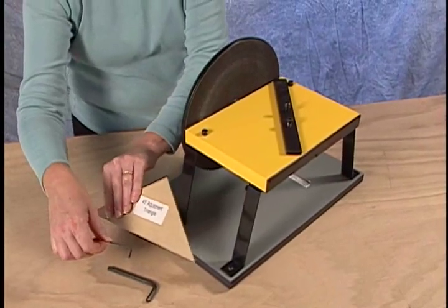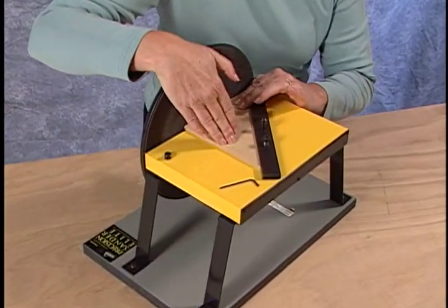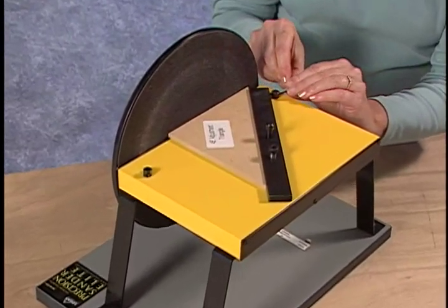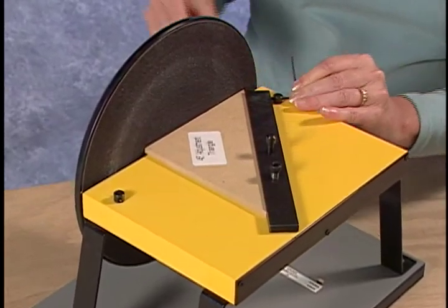To adjust the squareness of the sander, use the triangle adjustment tool. It should fit tightly into the machine. If any adjustments are needed, use the allen wrench provided to make minor adjustments on the sanding bar.